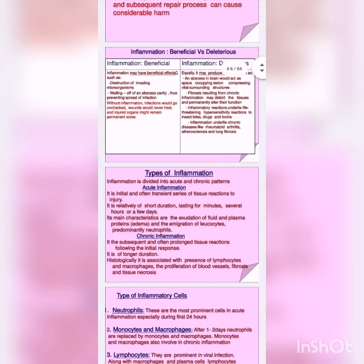There are two major types of inflammation: acute and chronic. Acute is the initial and often transient series of tissue reactions to injury. It is relatively short in duration, lasting for minutes, several hours, or a few days. Meaning, immediately after an injury, the acute inflammation response comes, and it is for a very short duration.